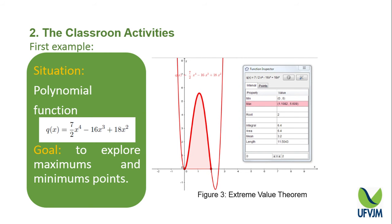This example had an interesting discussion, because at this time there were still many students with great difficulty constructing and understanding elementary function graphs. After a discussion of around 30 minutes, learning was achieved when the students were able to find the maximum and minimum points of the polynomial function, and also to understand why the derivative is zero at these points, which led them to better understand Fermat's theorem for stationary points.